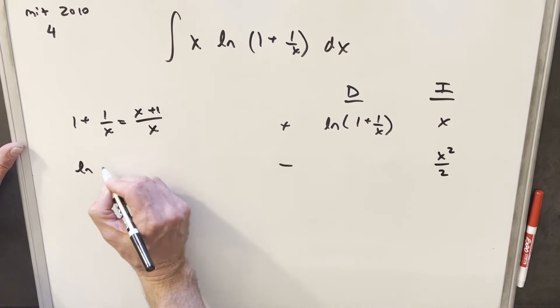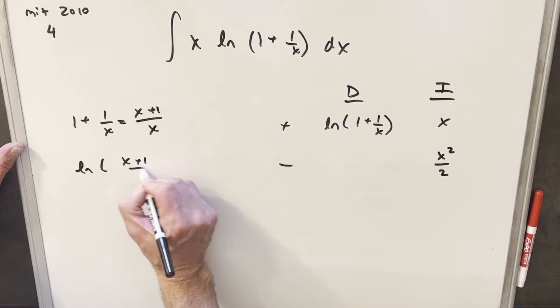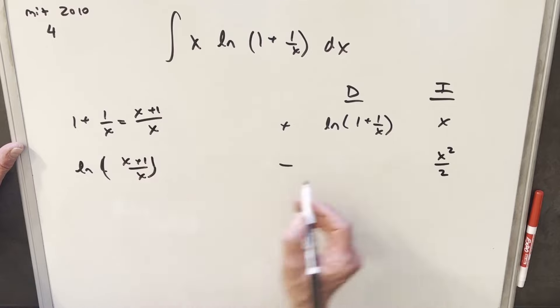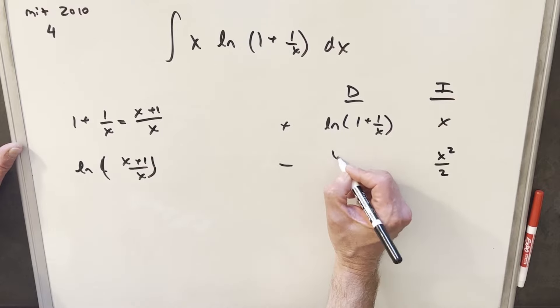So for the first part, if we're looking at it as ln(x plus 1 over x), now if we differentiate and put this in the denominator, we're going to just have the reciprocal, so we can write it as x over x plus 1.